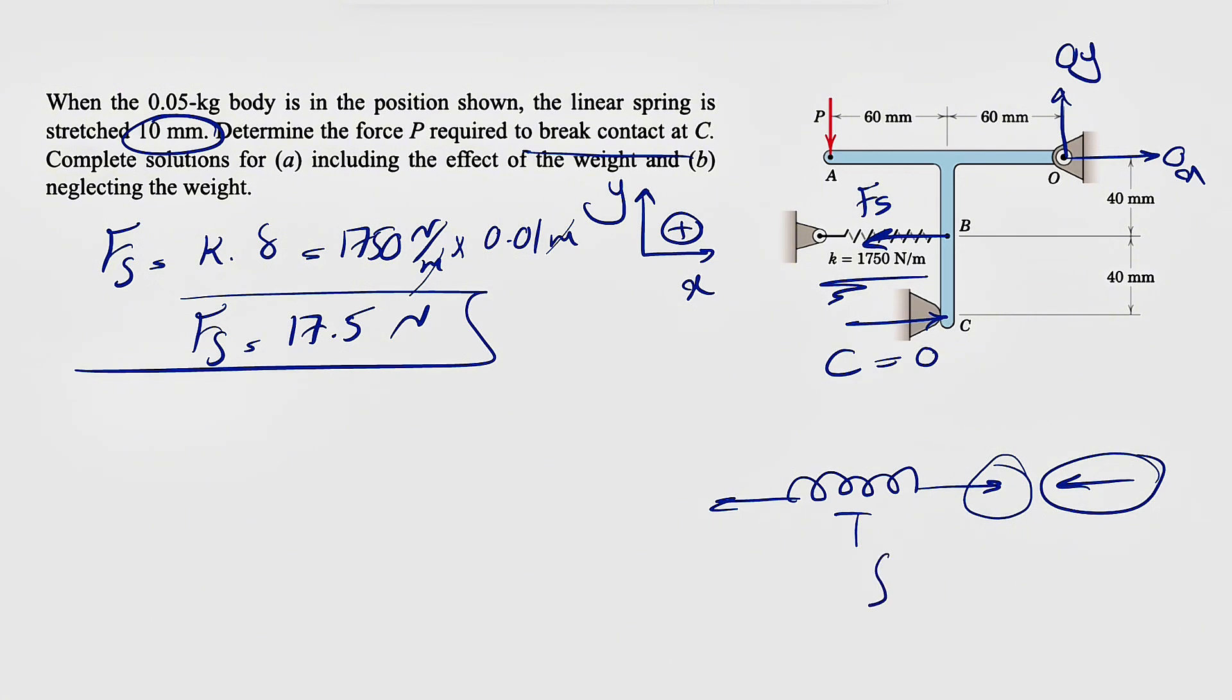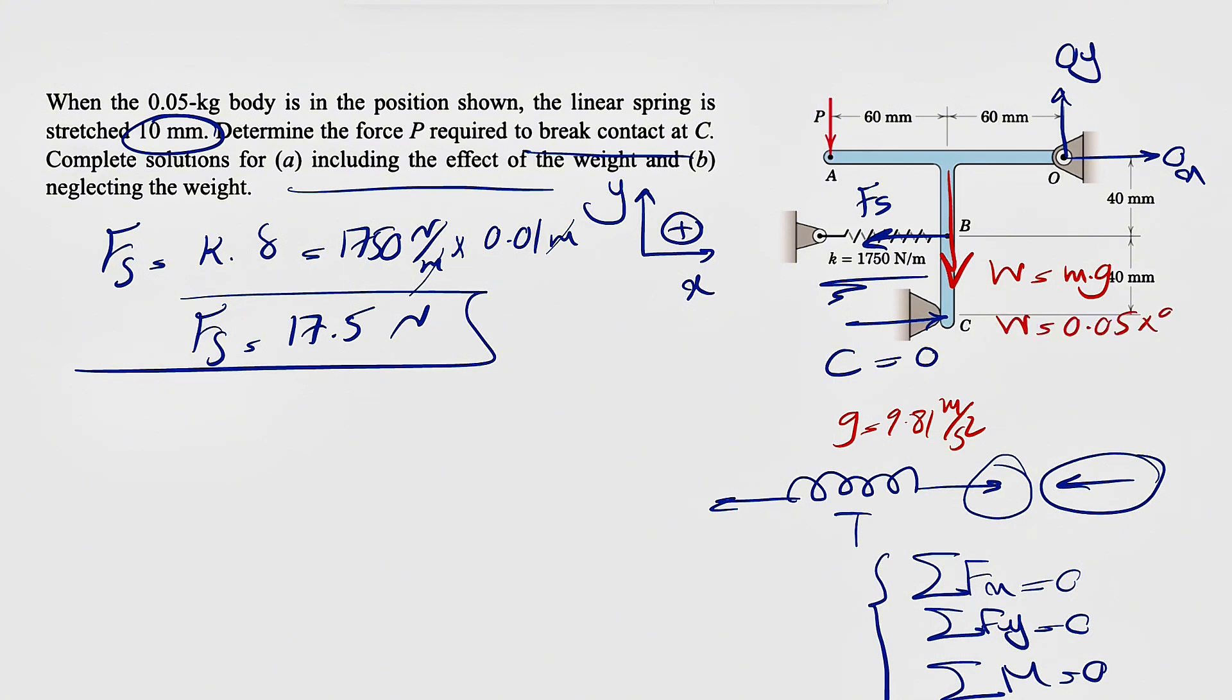We're in equilibrium, so we'll use equilibrium equations: sum of forces in X equals zero, same for Y, and for moments. Since we have two unknowns at point O, we'll take moments about O. One thing we need for part A is the weight. Weight equals mass times gravity, where g = 9.81 m/s². So the weight is 0.05 × 9.81 Newtons.